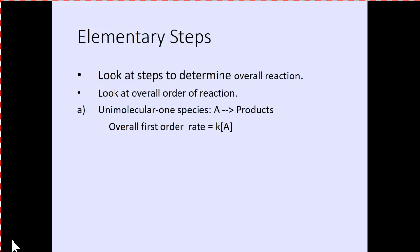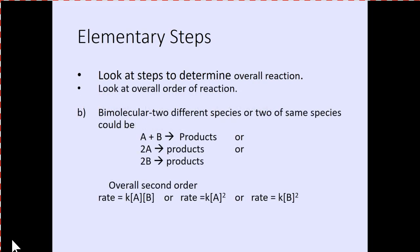Unimolecular means one species goes to the products — overall first order rate, K. If something is unimolecular, only one of the reactants matters. All of the others are zero order. This is the only one that makes a difference to the overall rate. That is known as unimolecular.